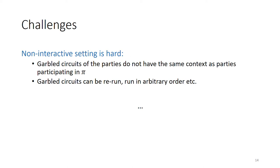Note that the garbled circuits of the parties do not have access to the same information as the parties in the original interactive protocol, in the sense that the garbled circuit only knows the inputs given to the circuit. It does not know, for example, what inputs have been fed into other garbled circuits, and it doesn't know whether it has been already executed multiple times on different inputs. This certainly cannot happen during the interactive protocol — parties see all the broadcasted messages, know which round of the protocol they are at any given time, and cannot be forced into executing the same round twice. There are multiple challenges that we had to overcome in our construction due to such issues.